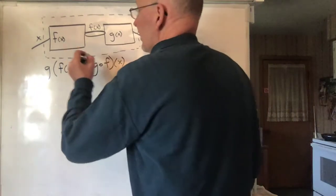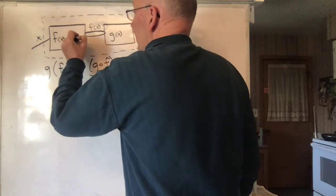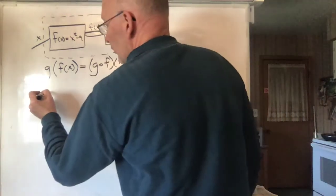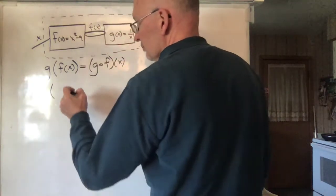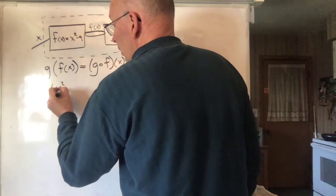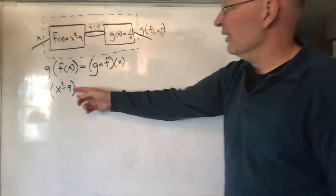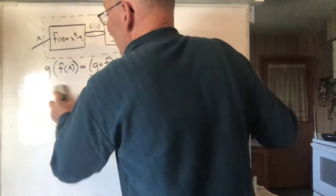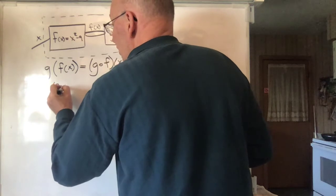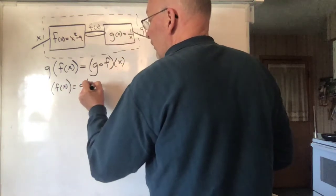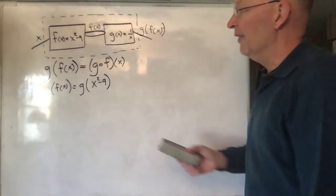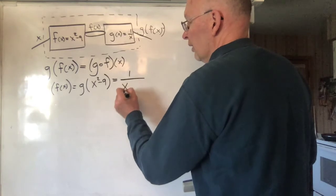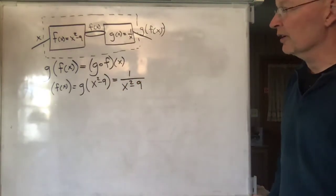For example, if F of X is equal to X squared minus 9, and G of X is equal to 1 over X, then what would this look like? G of F of X is going to be G of — what is F of X? It's X squared minus 9. What does G do to anything? G takes what you put into it and gives 1 over that. So it's going to be 1 over X squared minus 9. That would be the function G of F of X.